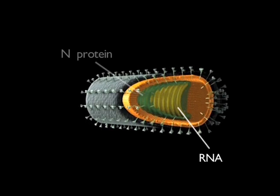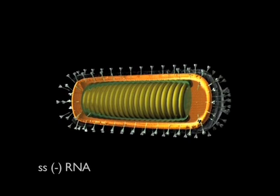The ribonucleoprotein core consists mainly of the RNA genome and the nucleocapsid protein. The RNA is single-stranded, of negative polarity, and it's tightly encapsulated by N-protein molecules.